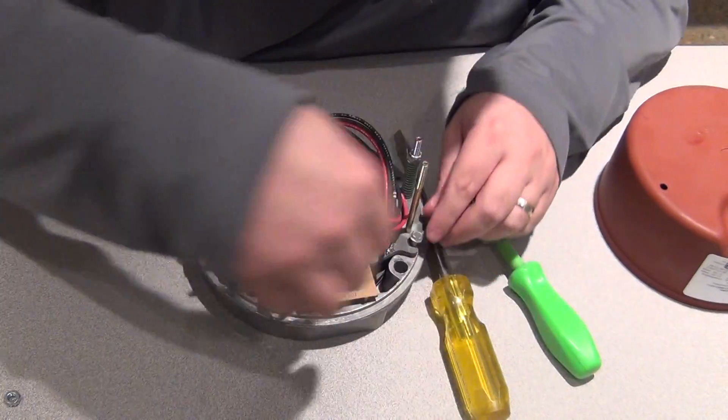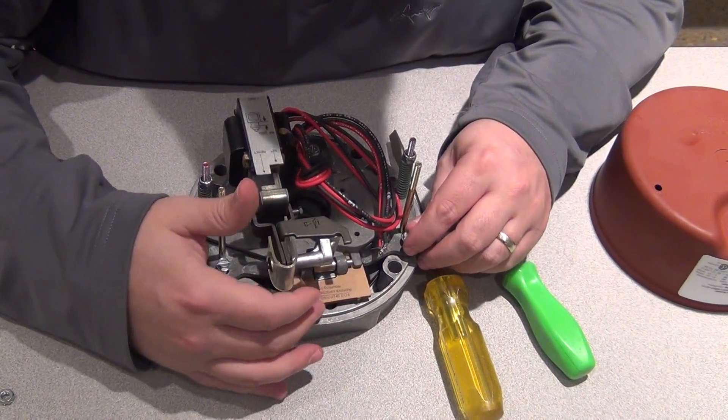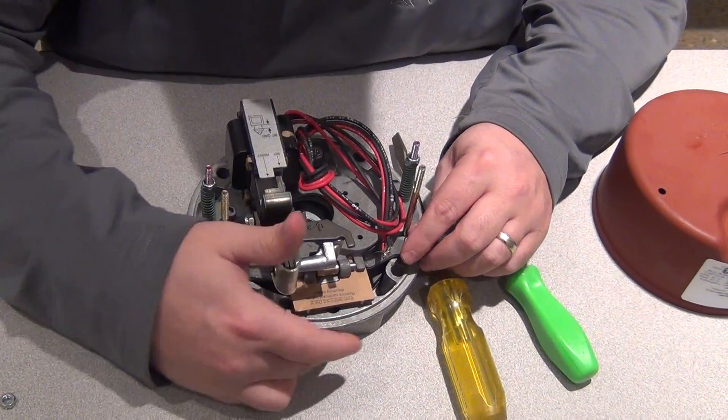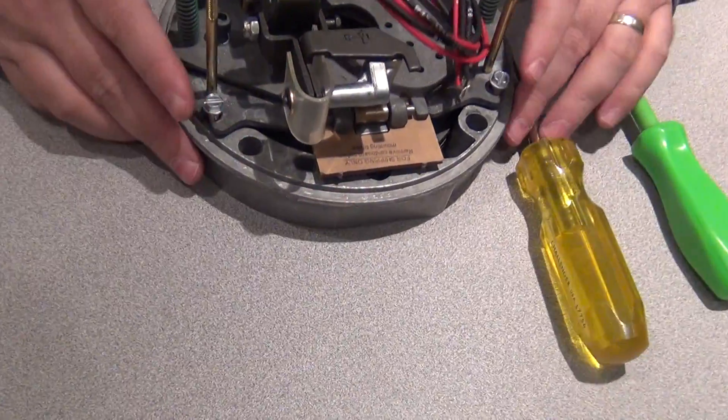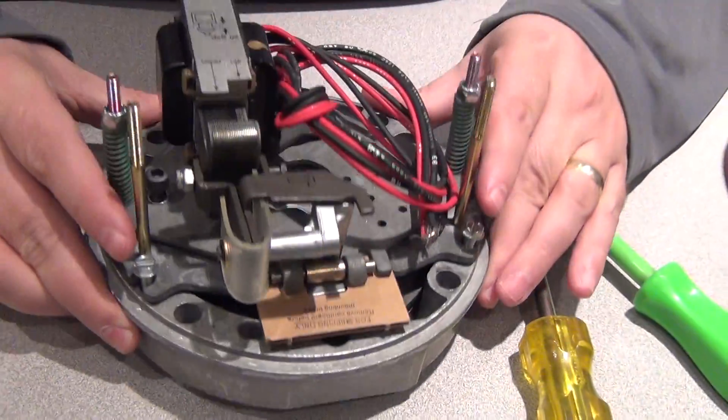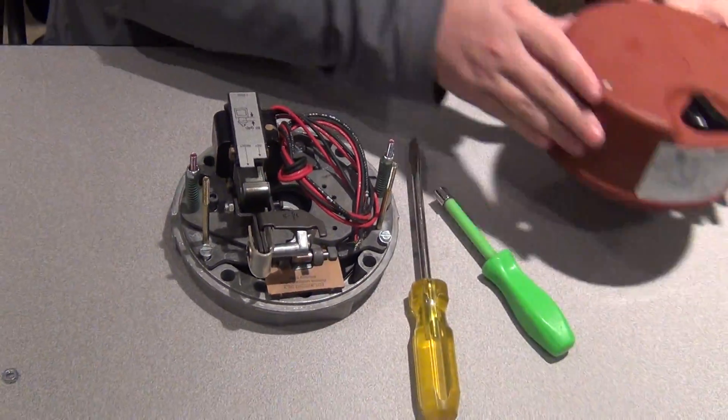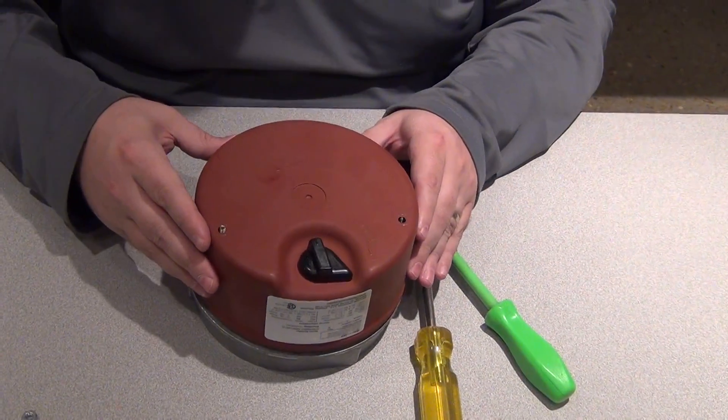And notice when you are putting it in, the flat part up here coincides with the flat part on the top of the brake. Then everything is screwed down. Put the lid back on and wind it all up.